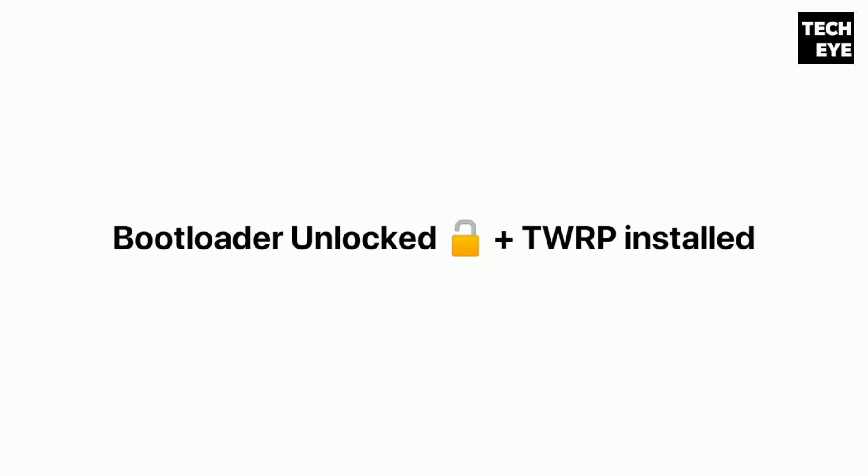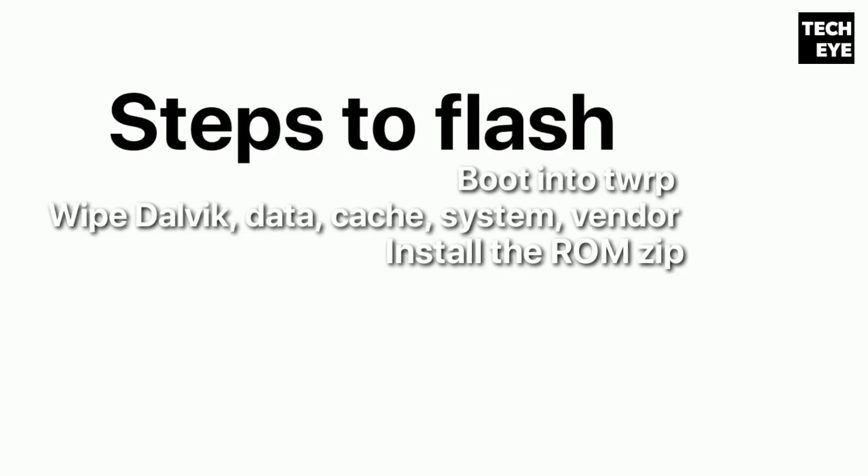If your phone's bootloader is unlocked and TWRP is installed, you can flash this ROM very easily. Just boot into recovery, then wipe the system, vendor, data, dalvik, and cache partitions, and then install and flash this ROM. You can download the ROM from the link in the description.